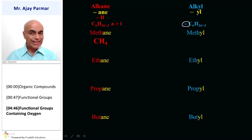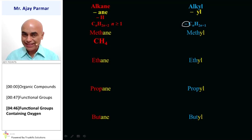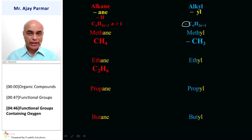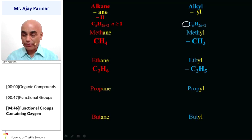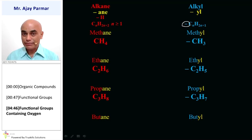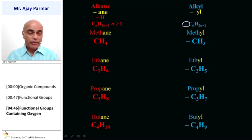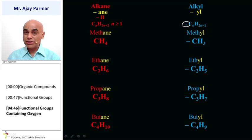The general formula of alkane is CnH2n+2, where N is greater than or equal to 1. For alkyl, we get rid of one hydrogen, giving CnH2n+1. Remember, alkyl is a group, not a compound, and therefore it is necessary to represent a bond in front of the alkyl group. For example, methane CH4 — remove one H — leaves CH3, so that is the methyl group. Ethane C2H6 gives C2H5 as the ethyl group. Propane C3H8 gives propyl C3H7, and butane C4H10 gives butyl C4H9.